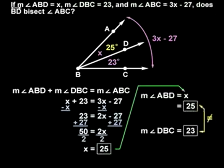we can see that the measure of angle ABD does not equal the measure of angle DBC. Therefore, ray BD does not bisect angle ABC.